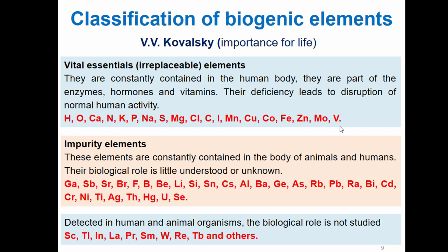The second class is called impurity elements. These elements are constantly contained in the body of animals and humans, but their biological role is little understood or unknown. These include strontium, bromium, fluorine, boron, beryllium, lithium, silicon, lead, aluminum, etc. Then we have another class of impure elements which are detected in human and animal organisms but whose biological role is not studied — like scandium, thallium, indium, etc.